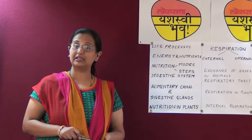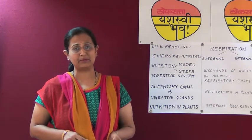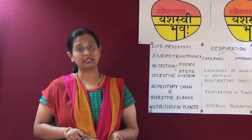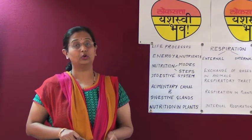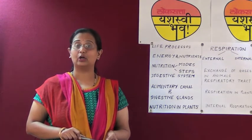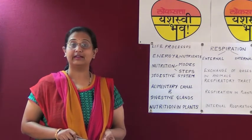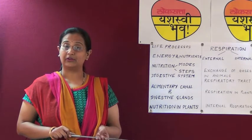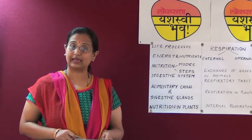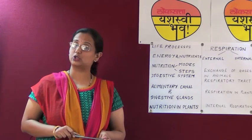The stomach is a muscular J-shaped organ. Here, churning and mixing of food takes place. Gastric glands present in the stomach help in the digestive process. Hydrochloric acid, enzyme pepsin, and mucus help in the process of digestion. From the stomach, food is then taken to the small intestine. Even though it is named 'small intestine,' it is the largest part of the alimentary canal — it gets its name only because it is small in diameter.